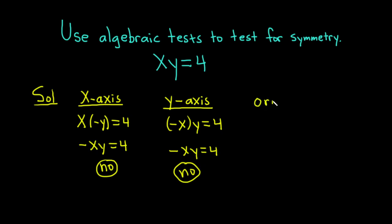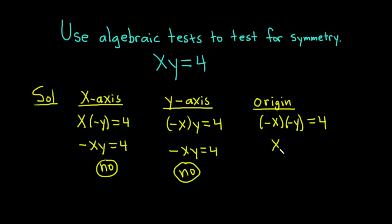The last one we're going to test for is origin symmetry. To test for origin symmetry, you replace both x and y with negative x and negative y, respectively. So instead of x we have negative x, and instead of y we have negative y, and this equals 4. Negative times negative is positive, so we just get xy equals 4. We got the same equation, so the answer is yes — we have origin symmetry in this example.